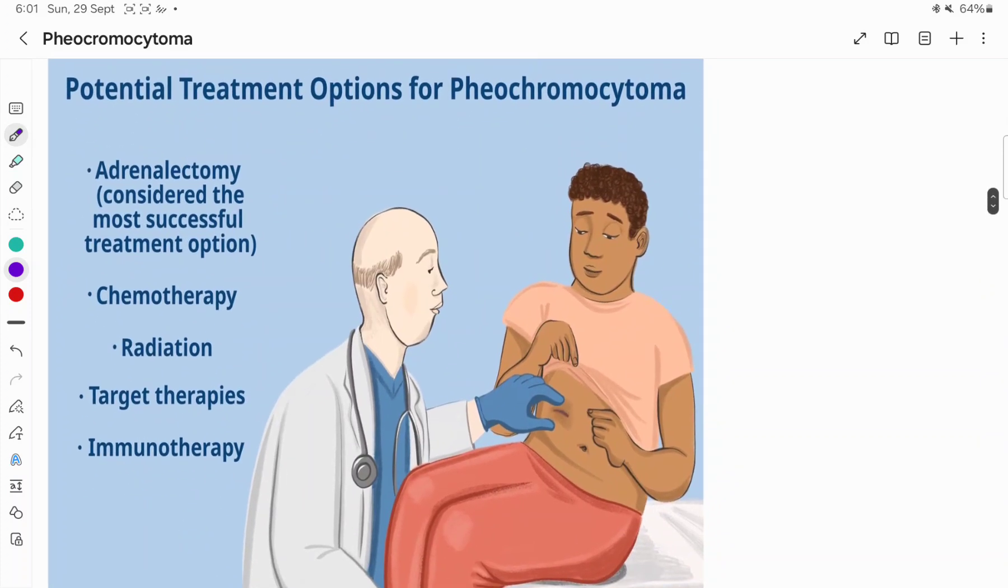The potential treatment options for pheochromocytoma are surgical removal, adrenalectomy, chemotherapy, radiotherapy, and targeted therapies using monoclonal antibodies or immunotherapy.